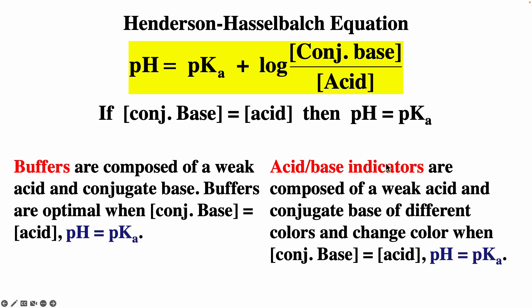Acid-base indicators are composed of a weak acid and conjugate base of different colors. They change color approximately when the concentration of the base equals the concentration of the acid. So you try to choose an indicator that has a pKa of the acid close to where the endpoint will be in terms of pH.